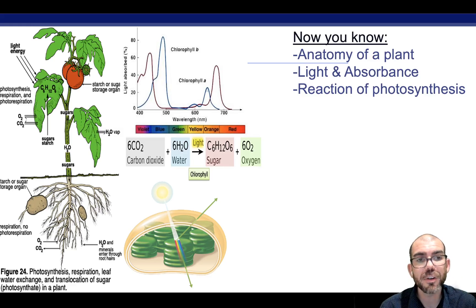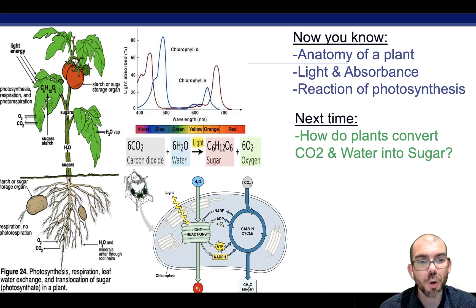So, now you've had an introduction into the anatomy of a plant, how light is used, and how it is absorbed. You know how to read that data from an absorbance spectra, and you're familiar with the reaction of photosynthesis: CO2, water, and light in, sugar and oxygen out. In the next video, we'll answer the question of how do plants do this? How are plants able to convert carbon dioxide and water into sugar and oxygen? Thank you, and I'll see you next time.